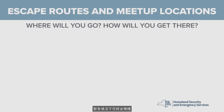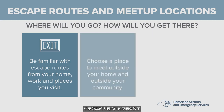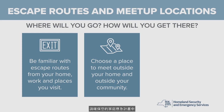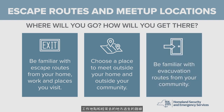Where will you go in an emergency, and how will you get there? Make sure all family members are familiar with escape routes from your home, work, and places you visit. If you are somehow separated from loved ones, ensure that your family emergency plan includes two locations where you will meet up. You should pick two locations — one near your home and another outside the community — and ensure that family members are familiar with evacuation routes from your community.